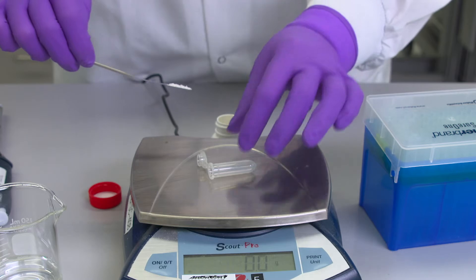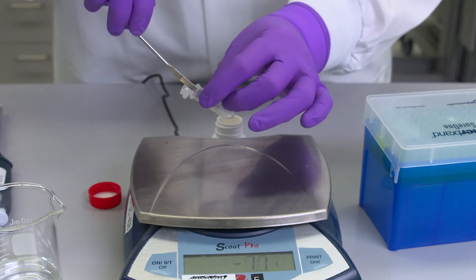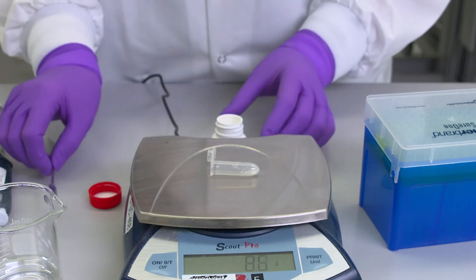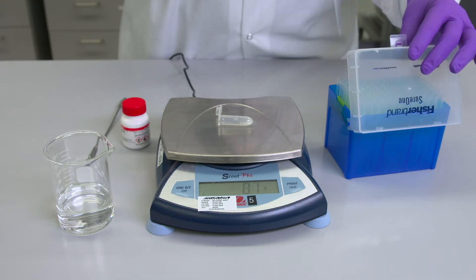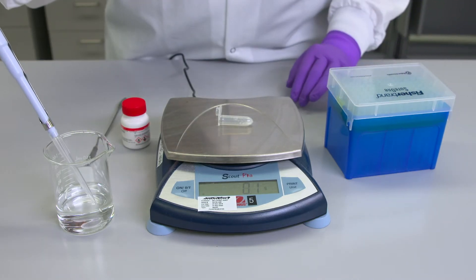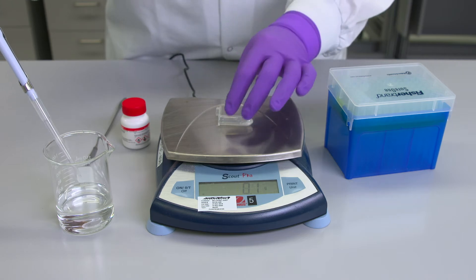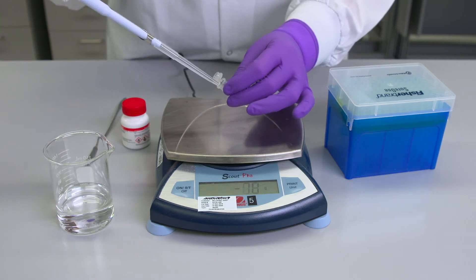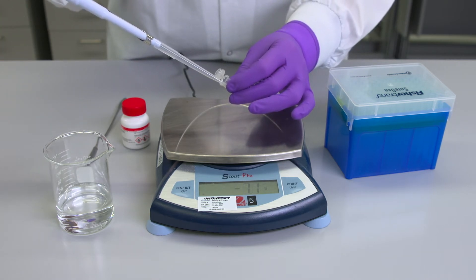Next I'll prepare a fresh 10% APS solution. APS in combination with TEMED initiates and accelerates acrylamide polymerization. The 10% APS can be made fresh before each use or can be aliquoted and stored at minus 20 Celsius.